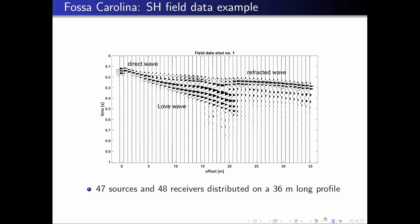Here you can see one of the raw SH shot gathers — we applied a low-pass filter with a maximum frequency of 80 Hz. Still a really impressive data quality with no visible noise, up to maximum offsets of about 36 meters. You can see nicely the direct wave and refracted wave. Notice that the arrival times of the refracted wave are significantly delayed in the area of the canal, simply because the canal filling consists of soil with very low S-wave velocities. So the location of the Fossa Carolina canal is identifiable directly from the raw data.